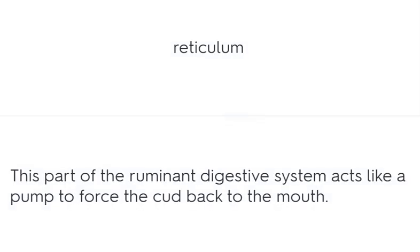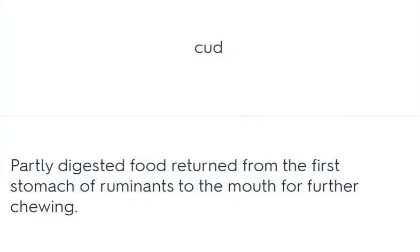Reticulum – this part of the ruminant digestive system acts like a pump to force the cud back to the mouth. Cud – partly digested food returned from the first stomach of ruminants to the mouth for further chewing.